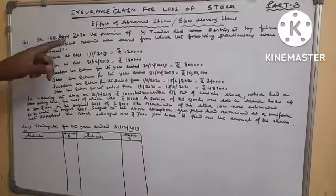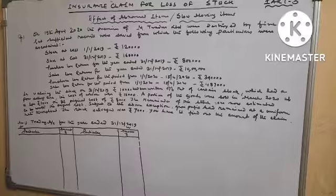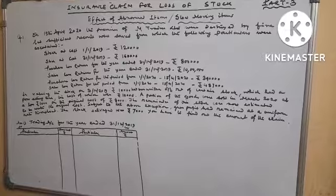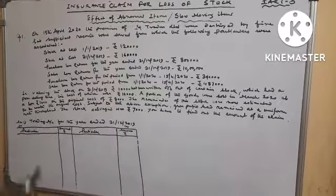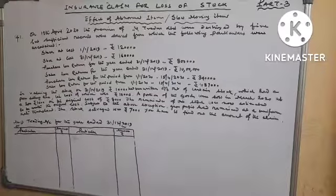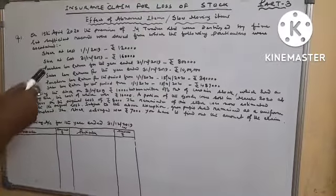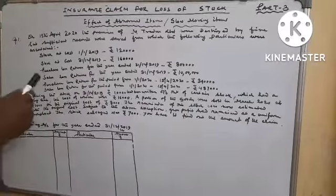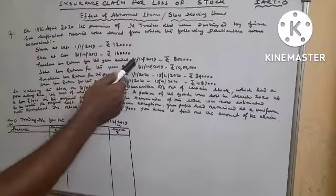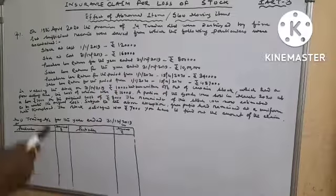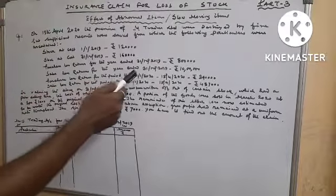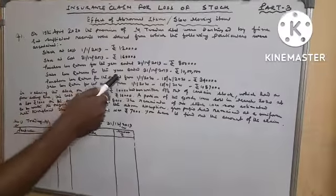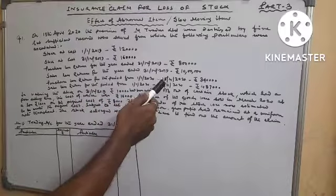Question given: on 15th April 2020, the premises of M-Traders Ltd. were destroyed by fire, but sufficient records were saved from which the following particulars were ascertained. Stock at cost 1-1-2019, Rs. 1,20,000. Stock at cost 31-12-2019, Rs. 1,60,000. Purchase less return for the year ended 31-12-2019, Rs. 8,00,000. Sales less return for the year ended 31-12-2019, Rs. 10,00,000.